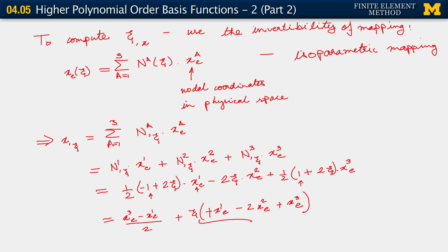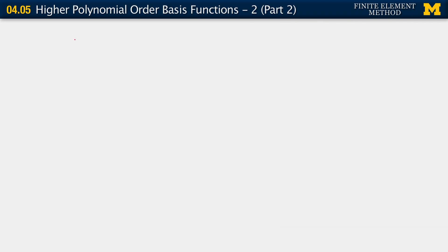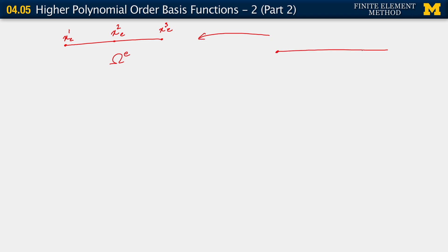That matters to get things right, because we need to examine what happens with this term. To examine it, let us look at our element more closely. We have Ω^e — a quadratic, or three-node element with quadratic basis functions. The mid-side node between x_1^e and x_3^e, which is x_2^e, is obtained from a mapping from the bi-unit parent domain where the coordinates are ξ = −1, ξ = 0, and ξ = 1.